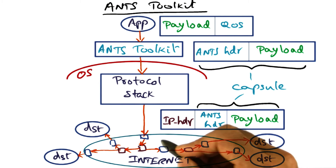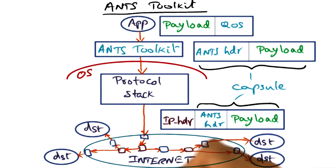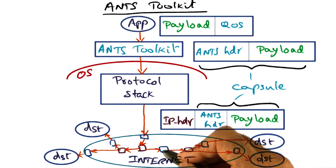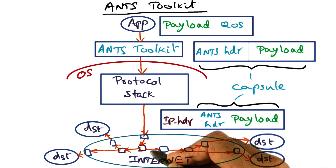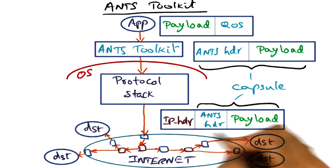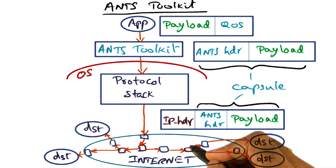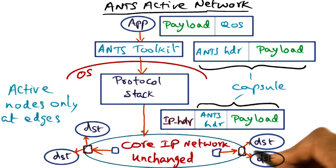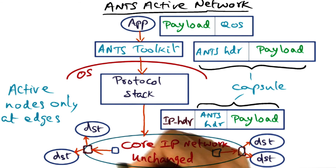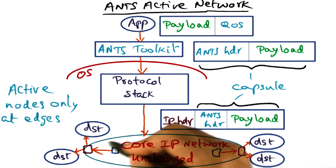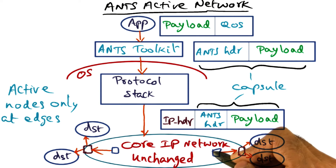The second part is the fact that the internet may not be open to having all routers process the specialized code that comes in the capsule. So what we do is keep the active nodes only at the edge of the network. The core IP network is unchanged and all of the magic happens only at the edge of the network.